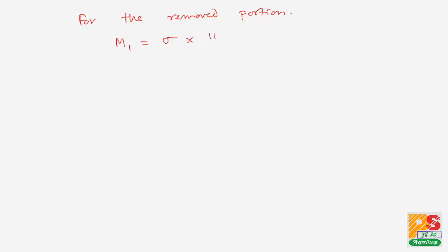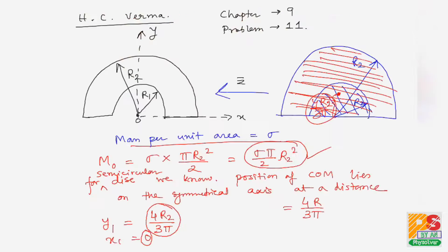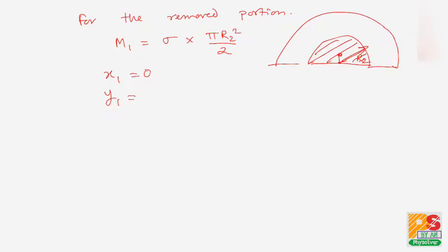For the removed portion, the area is π·r1²/2, so m1 = σ·π·r1²/2. The center of mass of this removed semi-circular portion lies at x1 = 0 and y1 = 4r1/(3π).